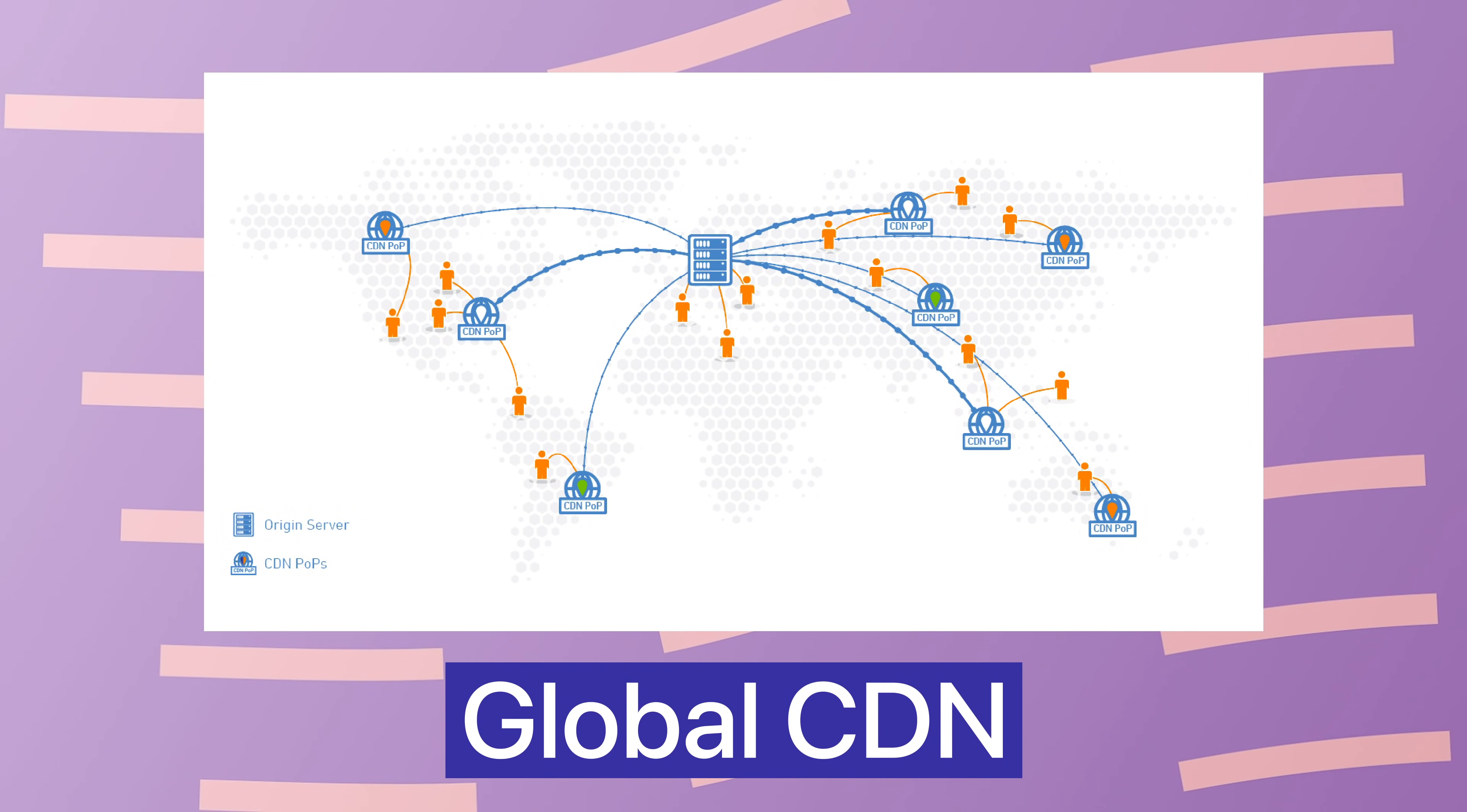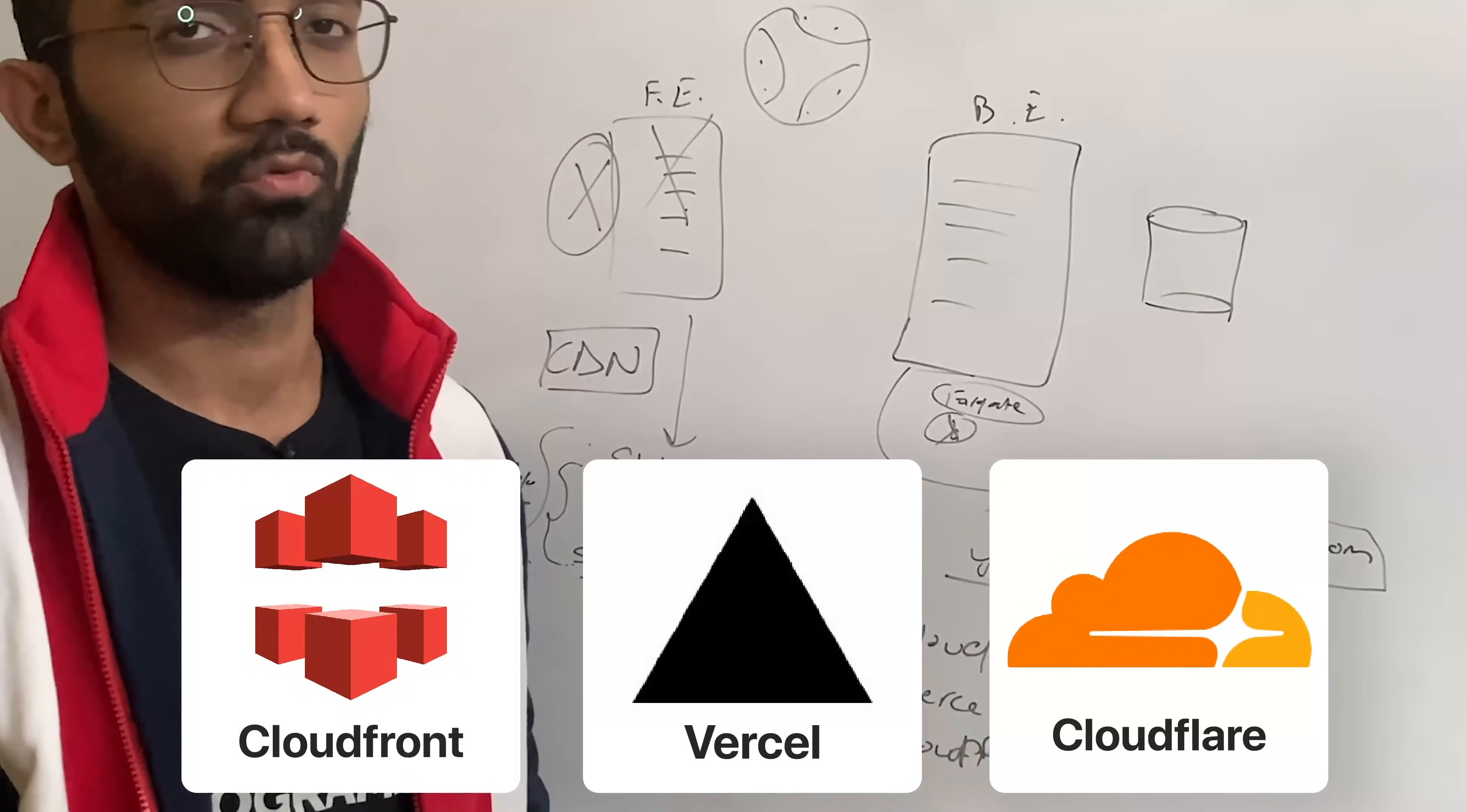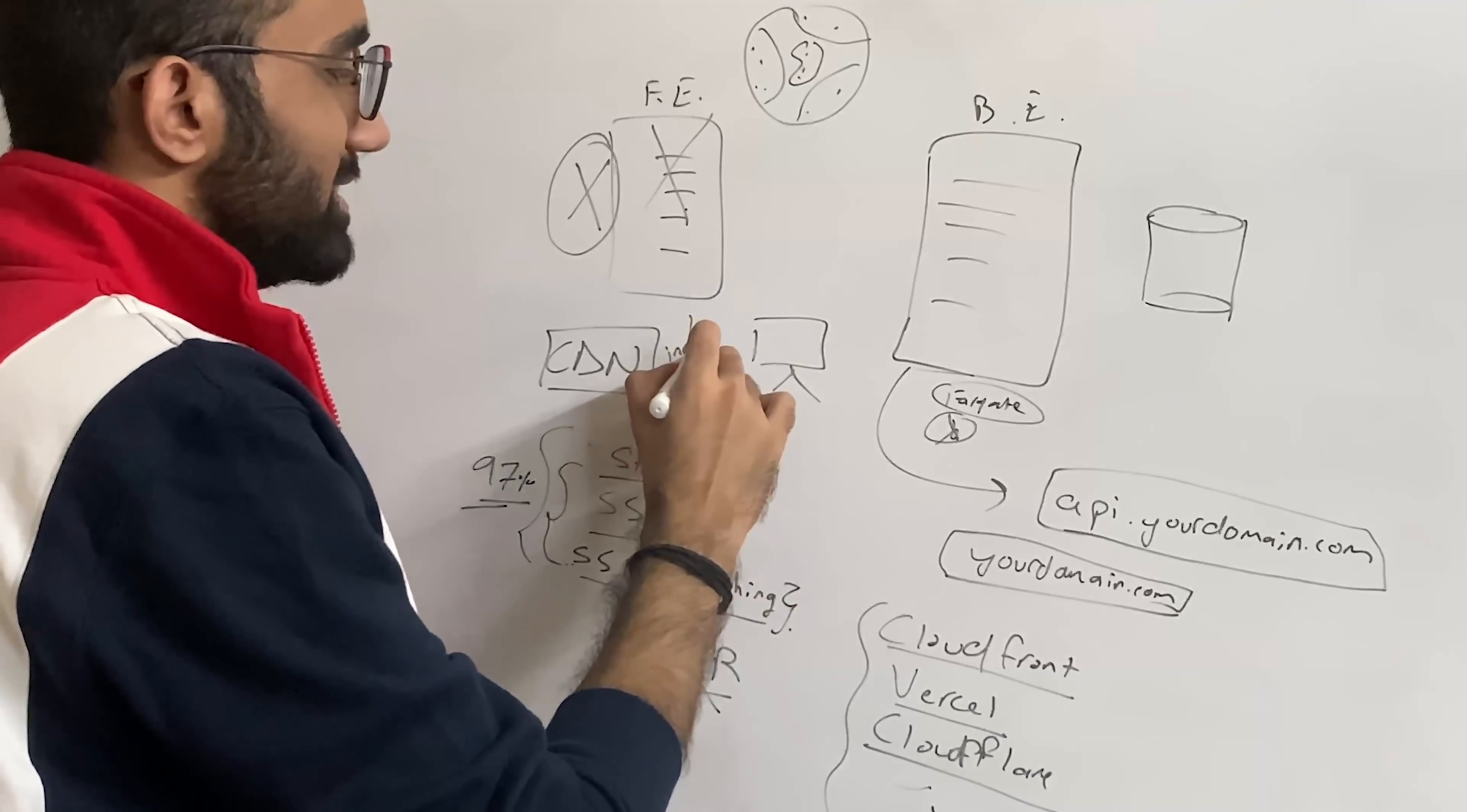For example when you deploy on let's say CloudFront, or when you deploy on Vercel which also I think internally would use CloudFront, or you deploy on something like Cloudflare - Cloudflare also has this concept of workers which you can deploy. When you deploy them on these cloud providers which have this geolocation available across the world, then what happens is the moment somebody enters your domain and hits enter, the first result is immediately fetched by the user from a CDN.